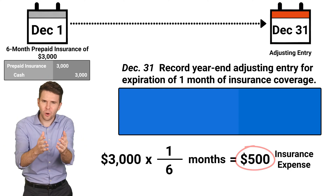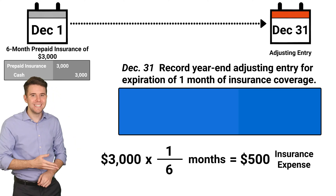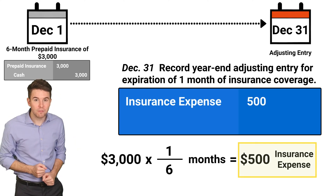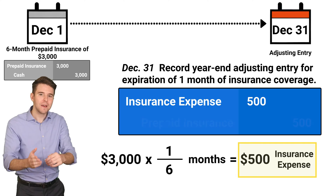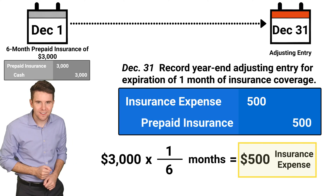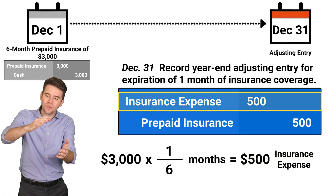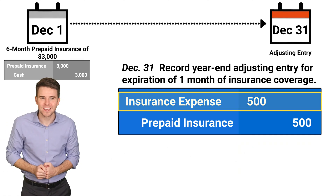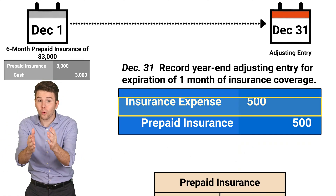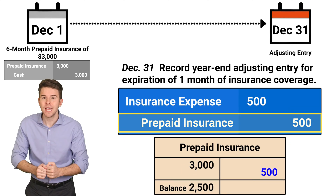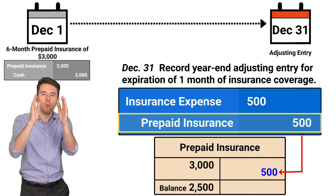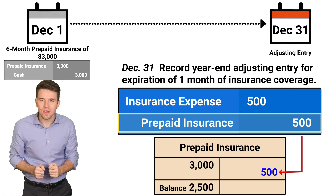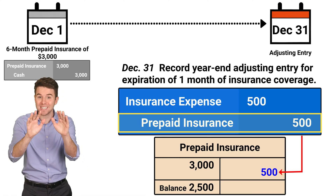To record this, we debit insurance expense for $500 and credit prepaid insurance for $500. We debit insurance expense to increase expenses. We credit prepaid insurance to reduce that prepaid asset account, because now one month of that insurance has expired.